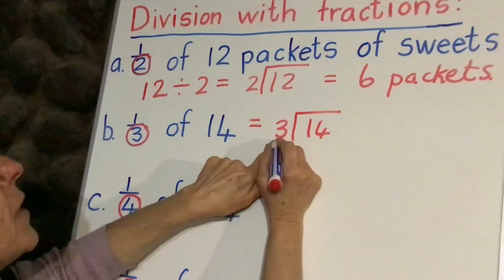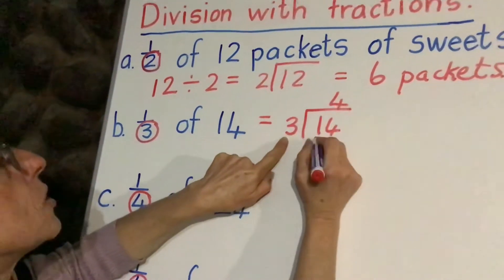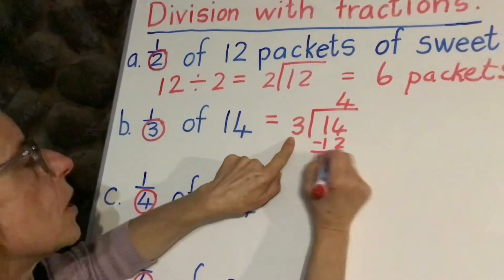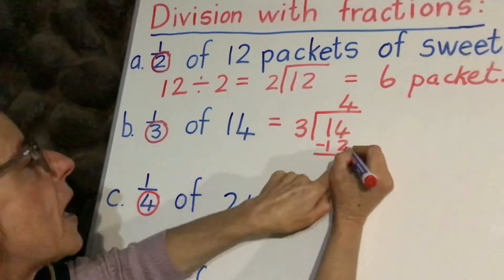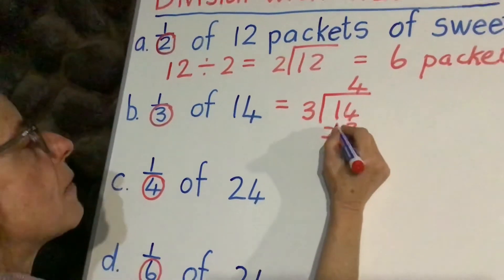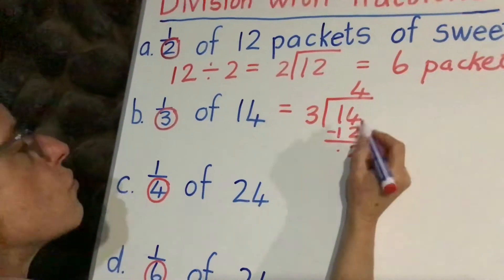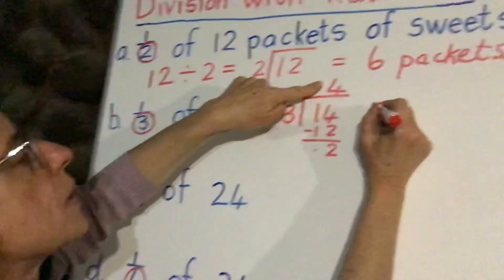Three times four is 12, we're going to minus the 12 off. Four minus two is two, one minus one is zero.